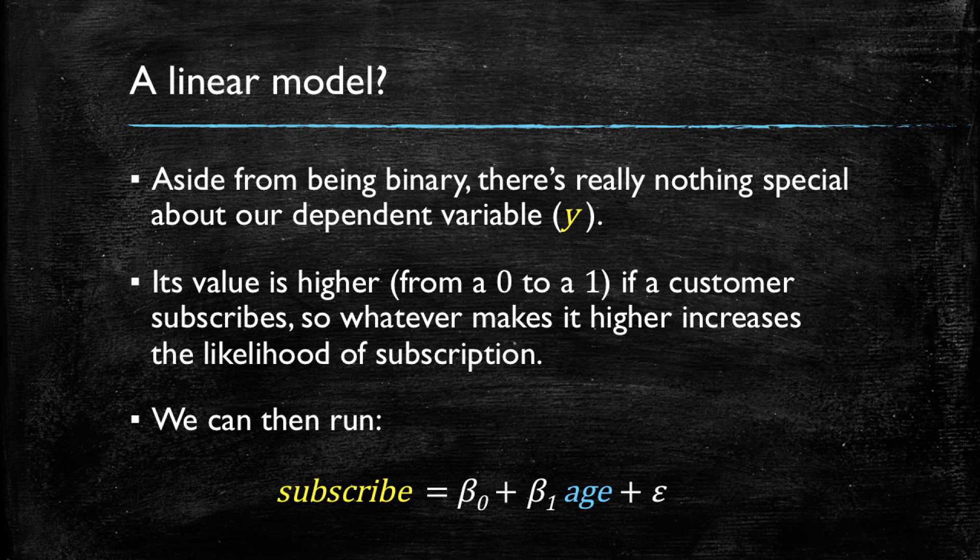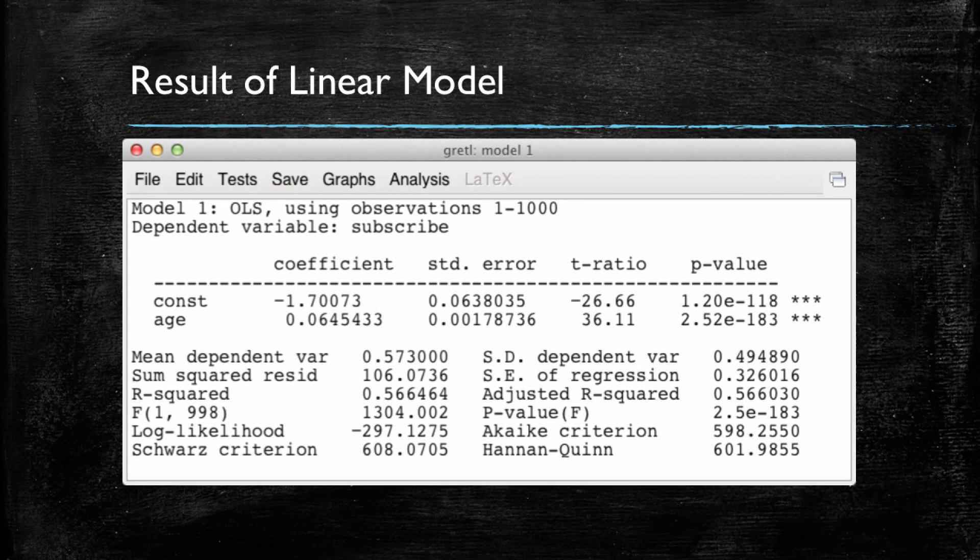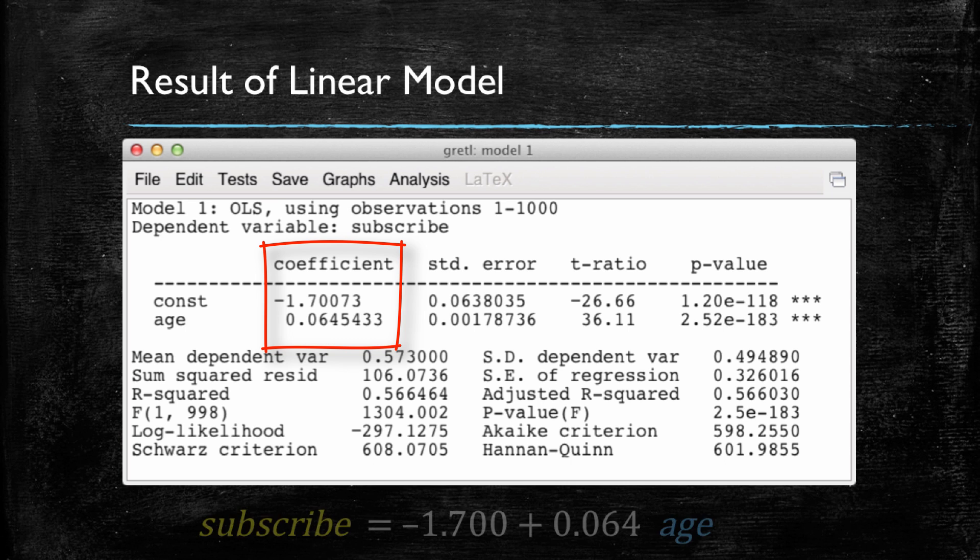So we could run a simple linear regression model that looks as the one shown, where we have subscribed the binary dependent variable as dependent variable and age as our only regressor. The regression output in a statistical package, in this case Gretel, shows us the coefficient for the intercept and the slope.